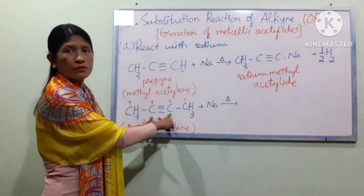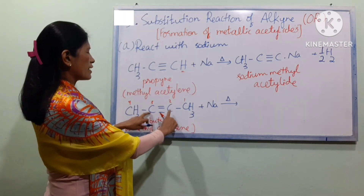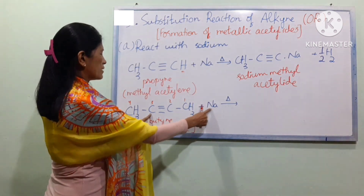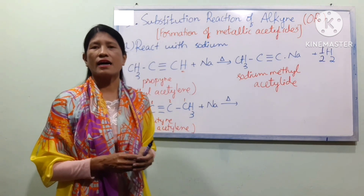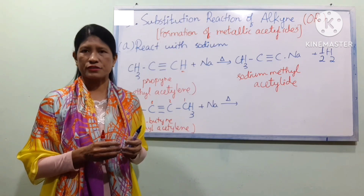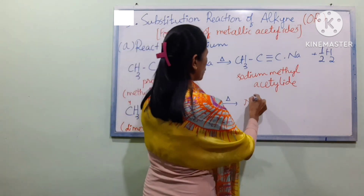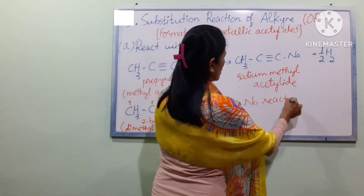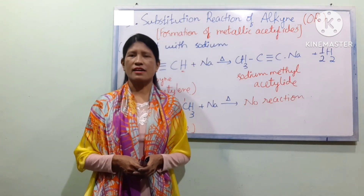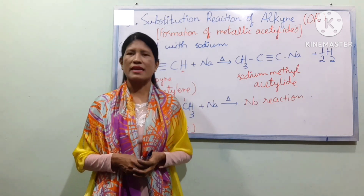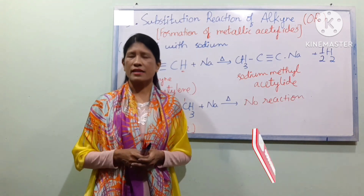This is a hydrogen machine — replaceable aluminum — a plate of hydrogen machine. This is the formation of metallic acetylide.